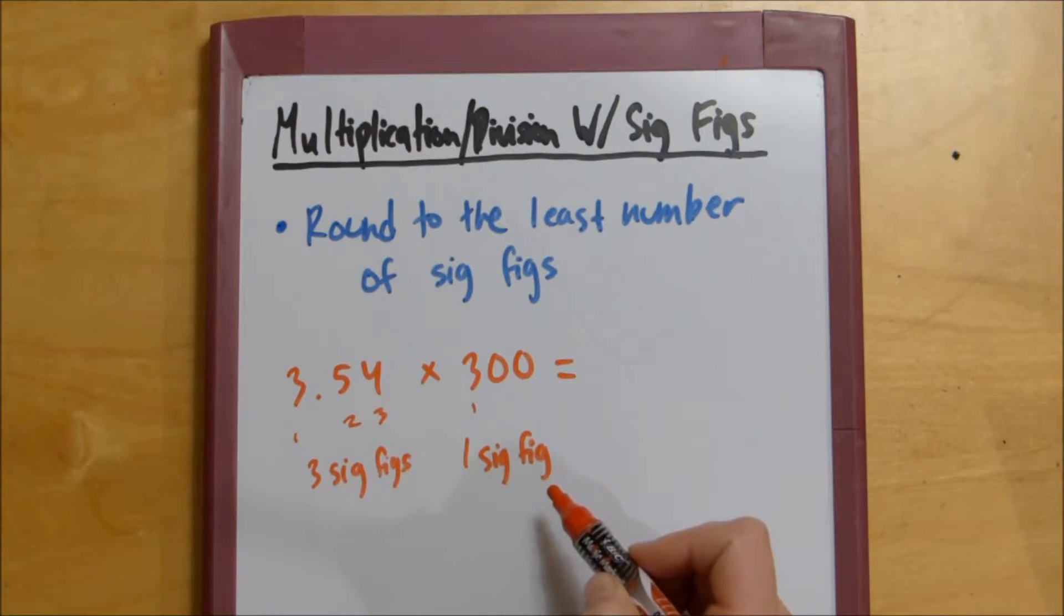So we know that our answer has to be to 1 sig fig. Normally when you have to round to 1 sig fig, that ends up with you having to round kind of awkwardly.